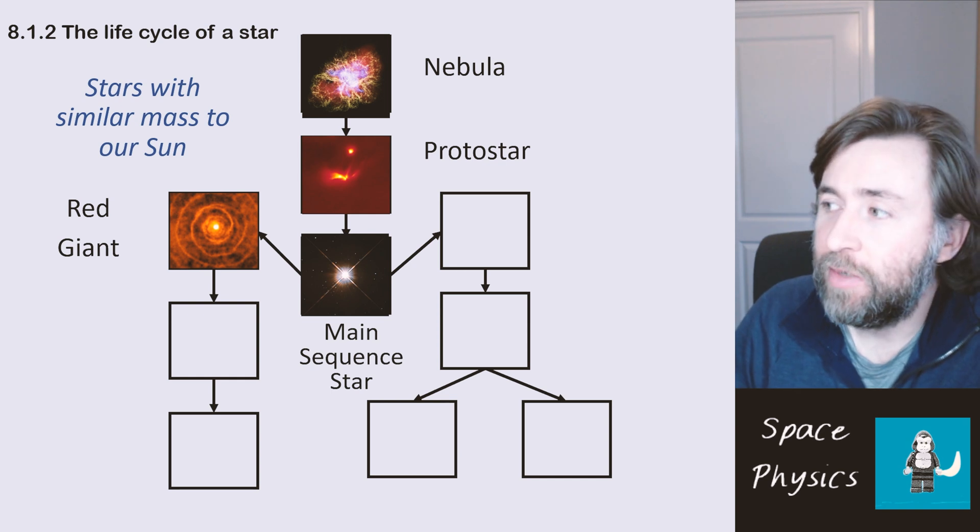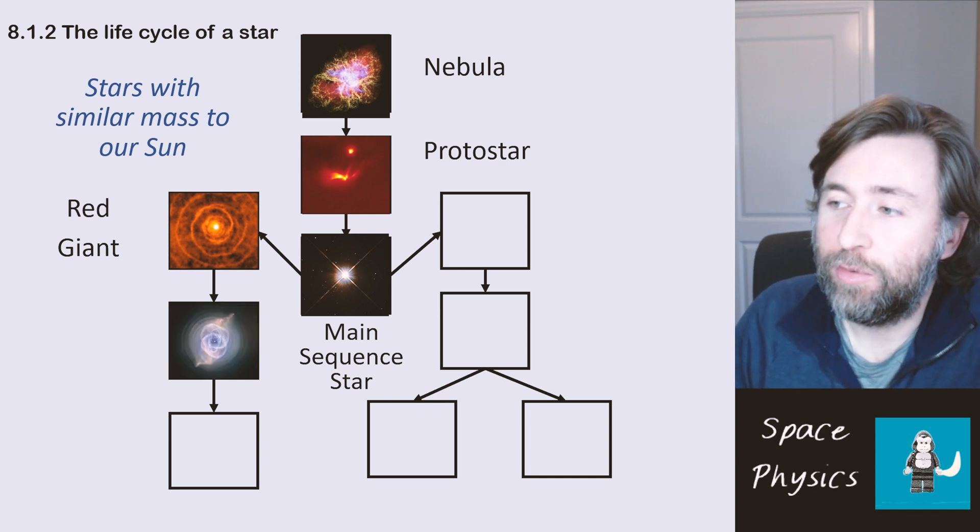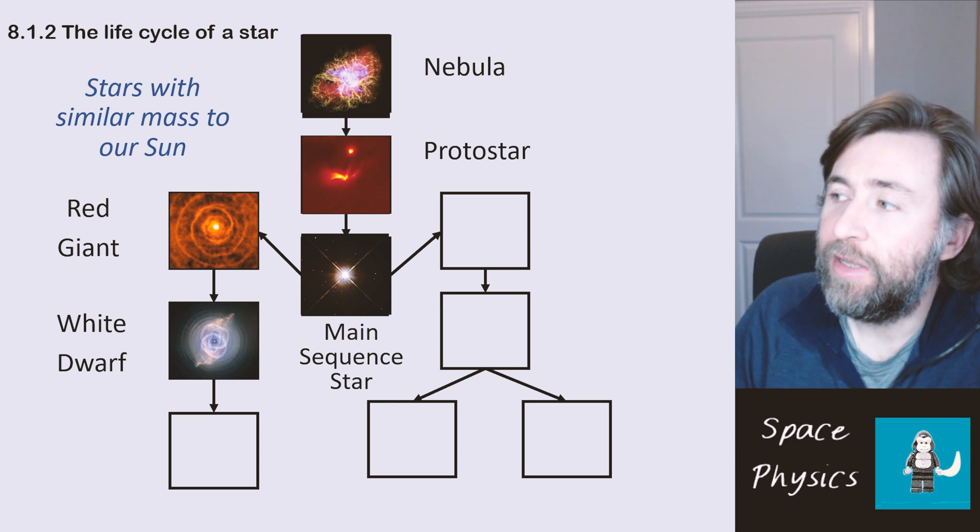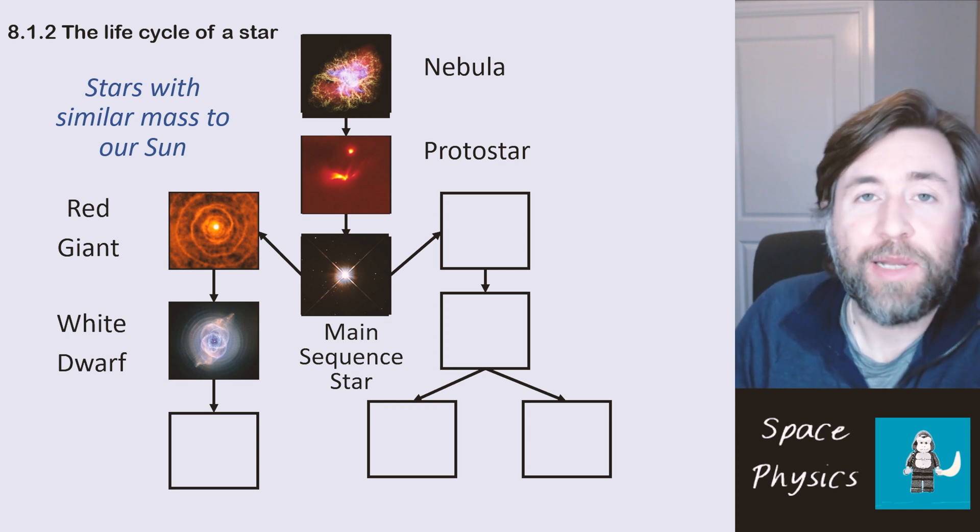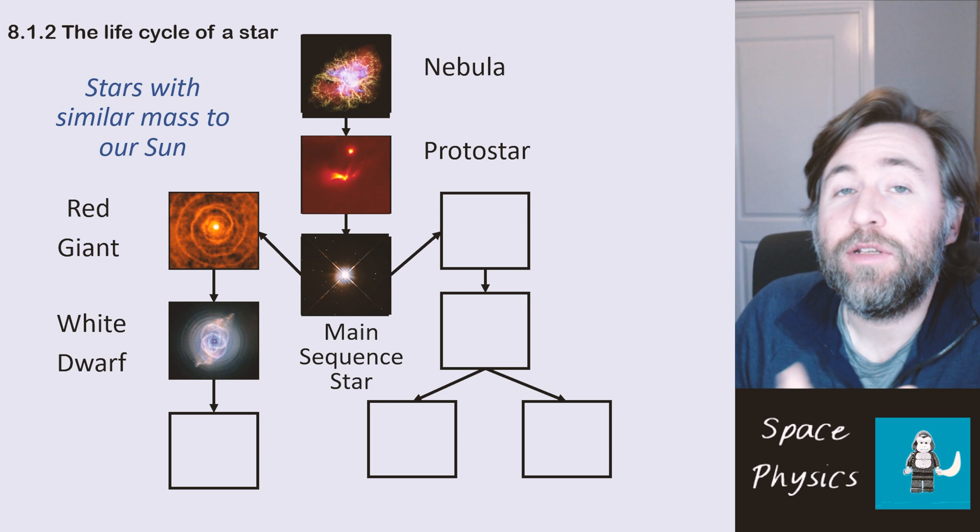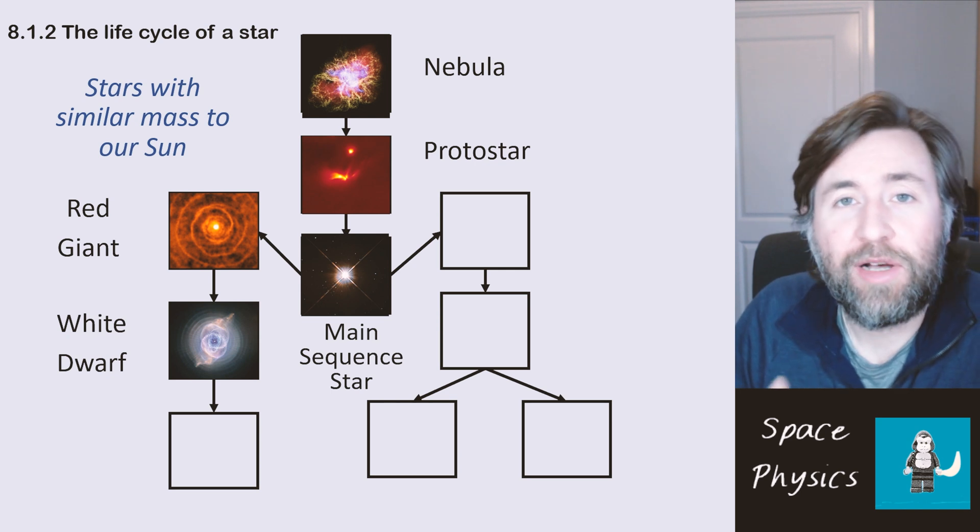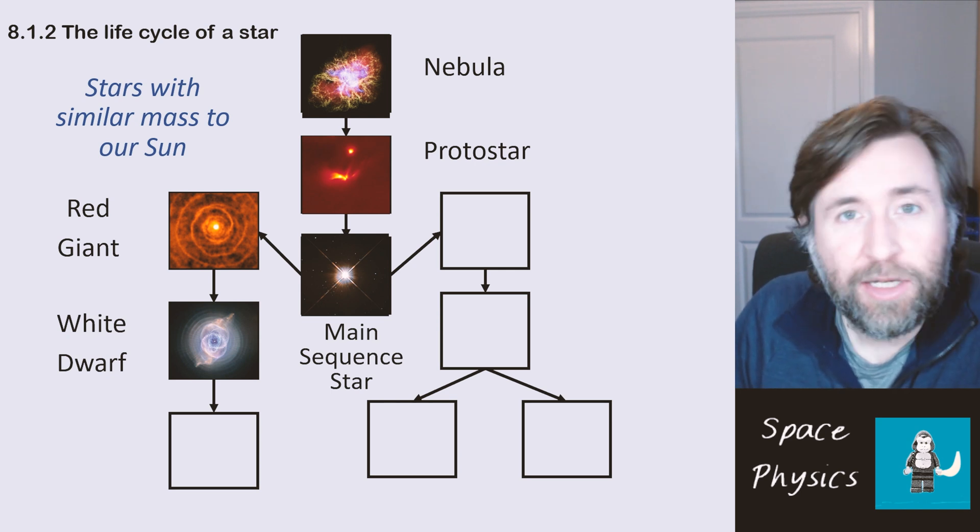At the end of its red giant phase then the layers will drift into space and you'll be left with what's known as a white dwarf. And that white dwarf could be surrounded by what's called a planetary nebula. A nebula that's unlikely to give birth to new stars but will have large bodies of rock and gas in it such as planets.